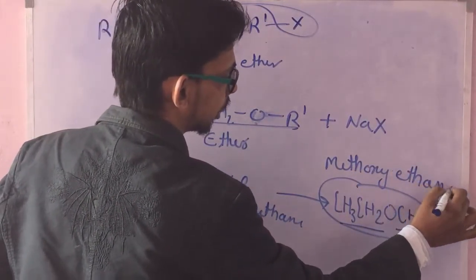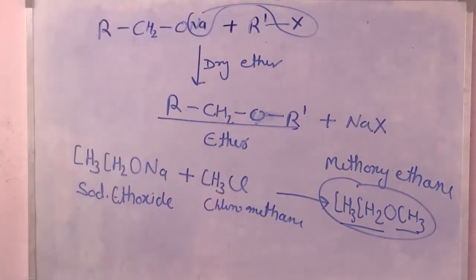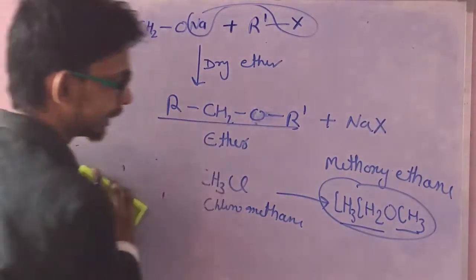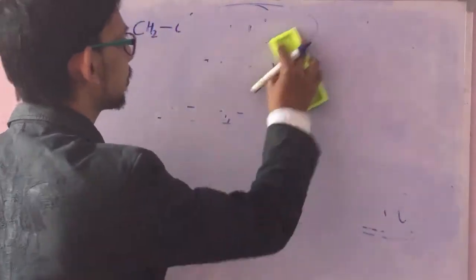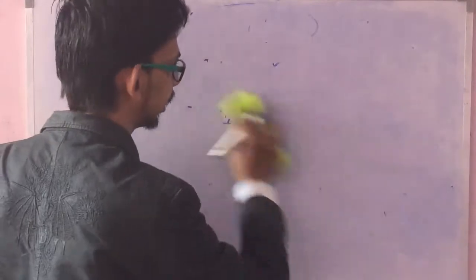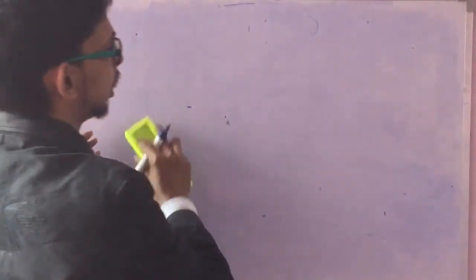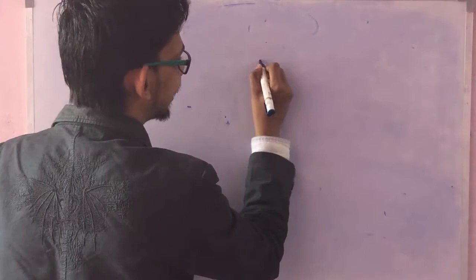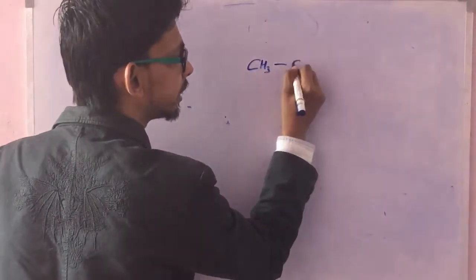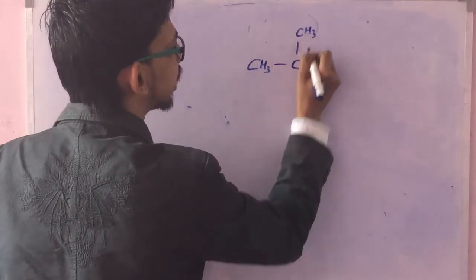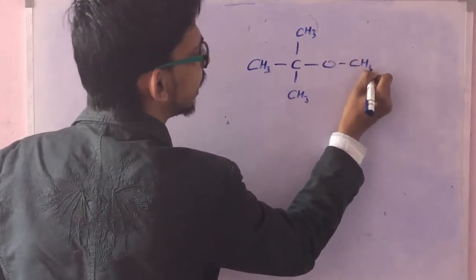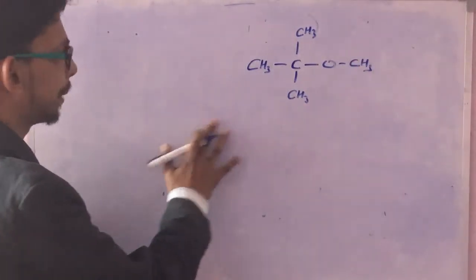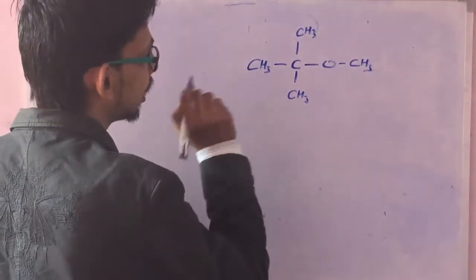Now there are few limitations. Let's suppose if I want to prepare CH3-C(CH3)2-O-CH3, that is methyl tert-butyl ether. In this case, there are two options.